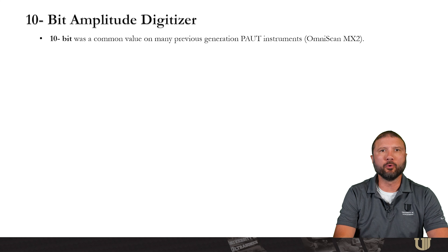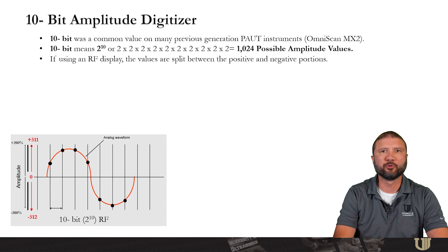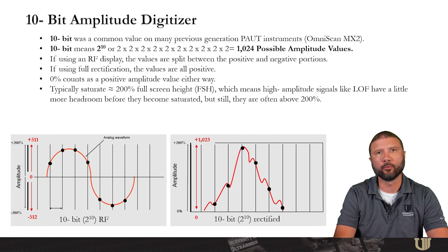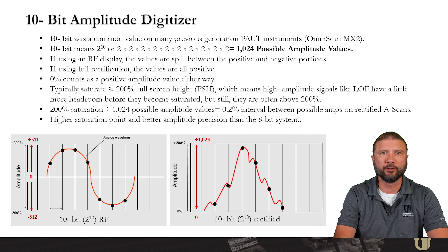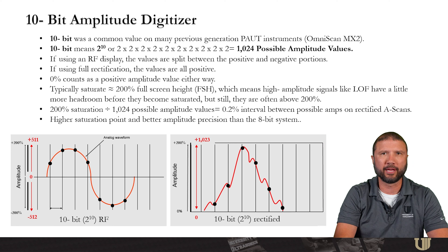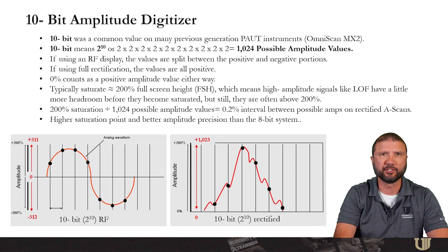10-bit was a common value on many previous generation phased array instruments, like the MX2. 10-bit means 2 to the 10th power, or 1024 possible amplitude values. If using an RF display, the values are split between the positive and negative side; using full rectification, the values are all positive, and 0% counts as a positive amplitude value either way. These typically saturate at about 200% full screen height, which means high amplitude signals like lack of fusion have a little more headroom before becoming saturated, though they are still often above 200% of screen. 200% saturation divided by 1024 possible amplitude values gives 0.2% interval between possible amplitudes on rectified A-scans — higher saturation point and better amplitude precision than an 8-bit system.